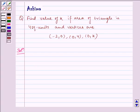Hello and welcome to this session. Let us understand the following problem today. Find value of k if area of triangle is 4 square units and vertices are (-2,0), (0,4), and (0,k).